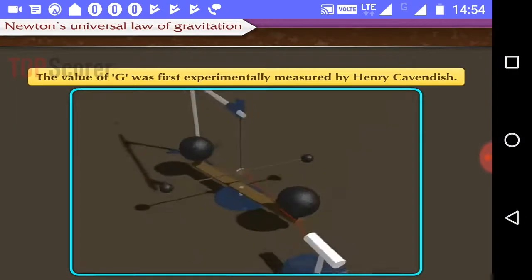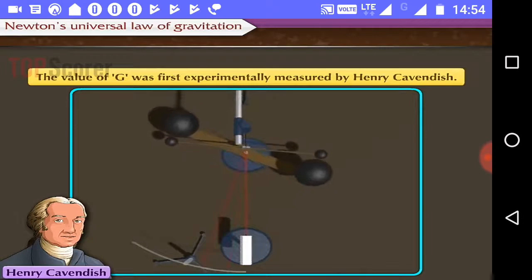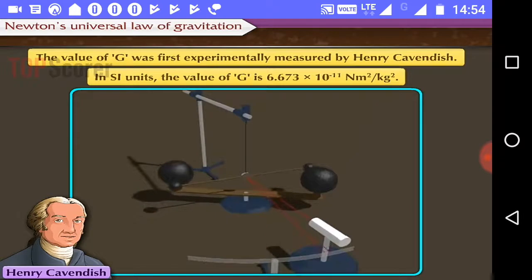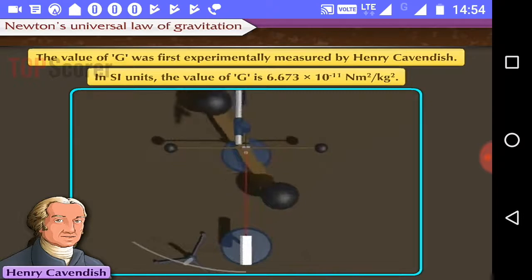The value of G was first experimentally measured by Henry Cavendish. In SI units, the value of G is 6.673 into 10 raised to minus 11 Newton meter square per kilogram square.